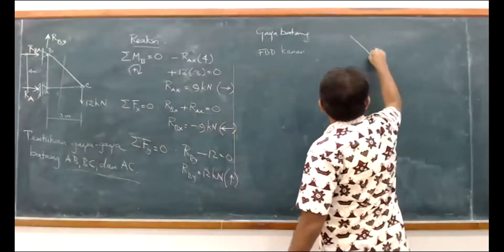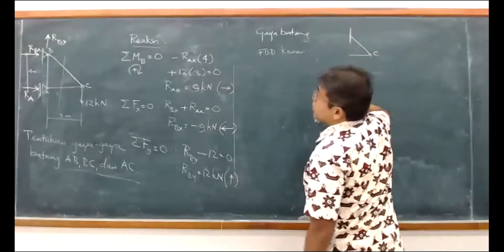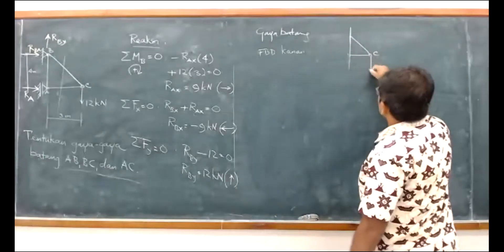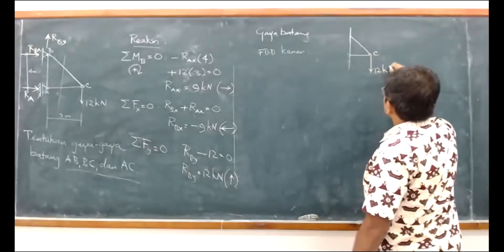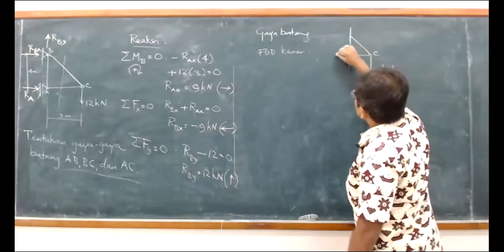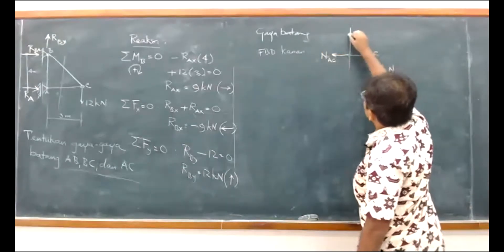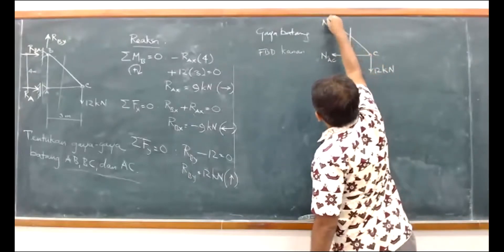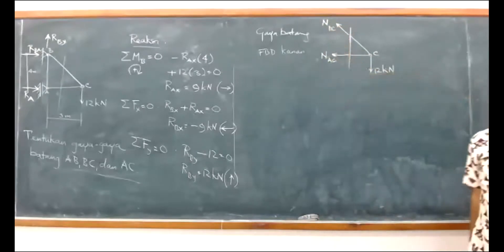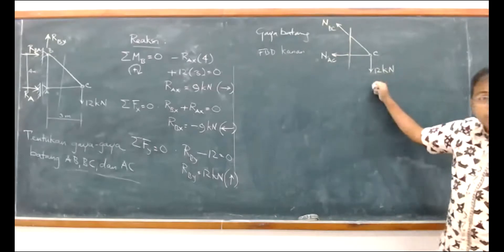Body-nya begini — itu titik C yang terlihat. Terus kemudian ada batang BC yang terpotong dan AC yang terpotong. Di sini ada gaya 12 kN. Karena terpotong, maka gaya dalamnya jadi kelihatan: ini NAC dan ini NBC, gaya normal AC dan gaya normal BC.